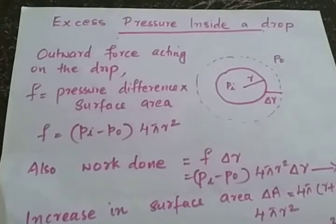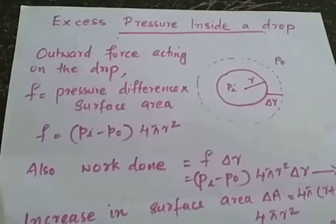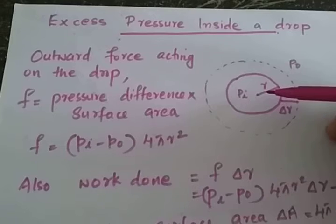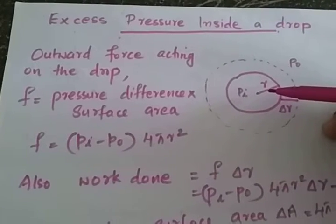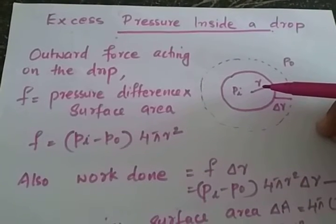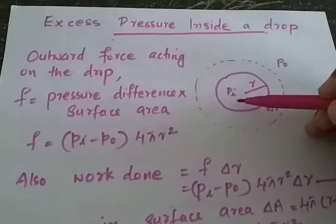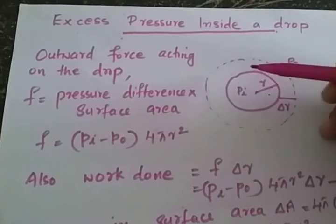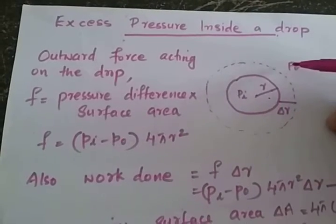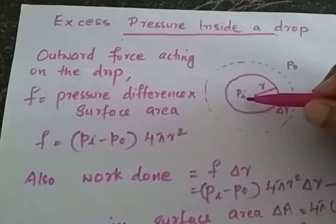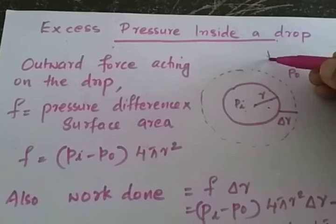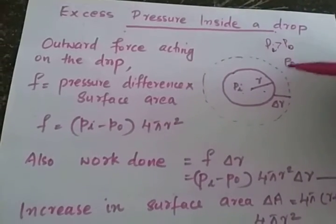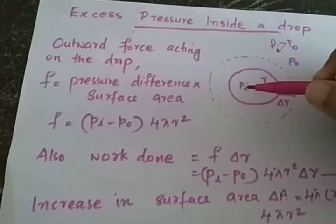The pressure inside the drop is greater than the pressure outside the drop, so there is always a pressure difference between inside and outside the drop. We have considered one such drop — it is spherical in shape. Let R be the radius of this drop, Pi be the pressure inside the drop, and Po be the pressure outside the drop. Pressure inside the drop is greater than the pressure outside, that is Pi will be greater than Po. So due to this pressure difference, the drop tends to expand because the pressure inside the drop is greater.